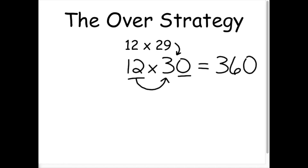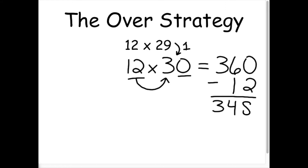Now, 30 groups makes me only one group away from my goal of 29 groups. I can subtract one group of 12 from my 30 groups of 12 in order to get the answer to my original problem, 12 times 29.